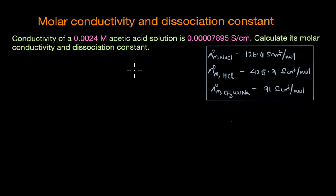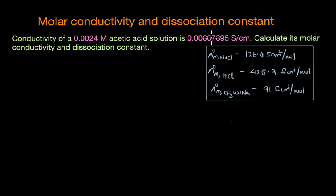In this video, we are going to solve a numerical question on molar conductivity and dissociation constant. The question states: conductivity of a 0.0024 molar acetic acid solution is 7.895 × 10⁻⁵ Siemens per centimeter. Calculate its molar conductivity and dissociation constant.